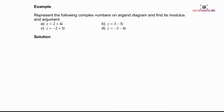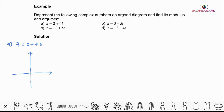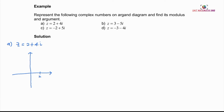We look at the example: represent the following complex number on an Argand diagram and find its modulus and argument. For example A, Z equals 2 plus 4i. To represent Z on the Argand diagram, we first draw the X and Y axes. The real part is 2 and the imaginary part is 4. We draw a line, and this is our Z on the Argand diagram.